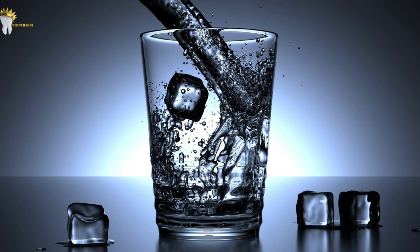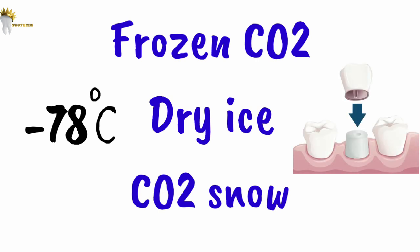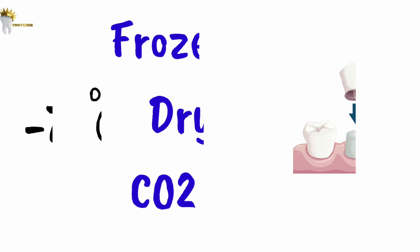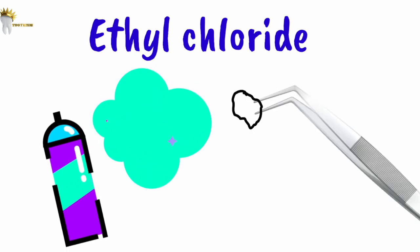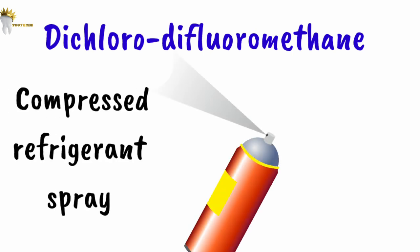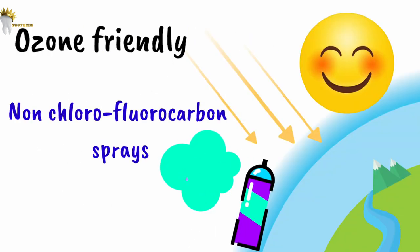Another simple method is ice cold water delivered via a syringe, isolating the tooth and bathing it. Frozen carbon dioxide — dry ice — at minus 78 degrees Celsius can also be used, including for full-coverage restorations to elicit a reaction from the underlying tooth. Ethyl chloride sprayed onto a cotton pledget forms ice crystals and can also be used. Similarly, dichlorodifluoromethane, a compressed refrigerant spray, can be sprayed onto a cotton pledget. More recently, ozone-friendly non-chlorofluorocarbon sprays have been introduced for cold testing.